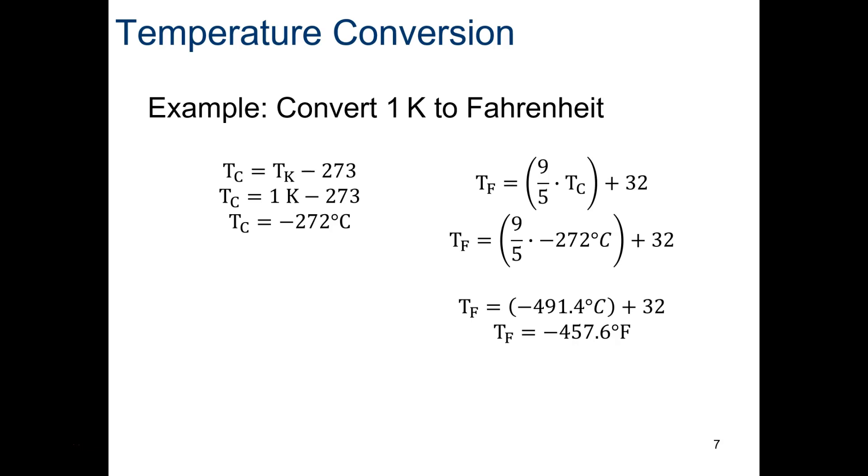Convert 1K to Fahrenheit. Take the 1K, subtract 273, that'll give you Celsius first. That's negative 272 degrees Celsius, times 9 fifths, plus 32. And you get a temperature Fahrenheit of negative 457.6. So you see that's very, very cold for us.